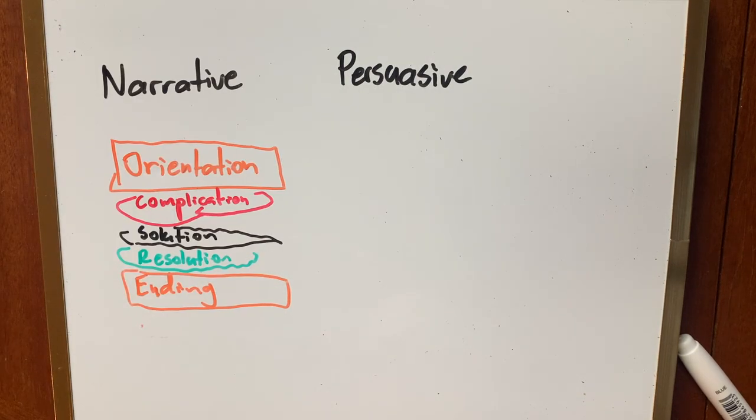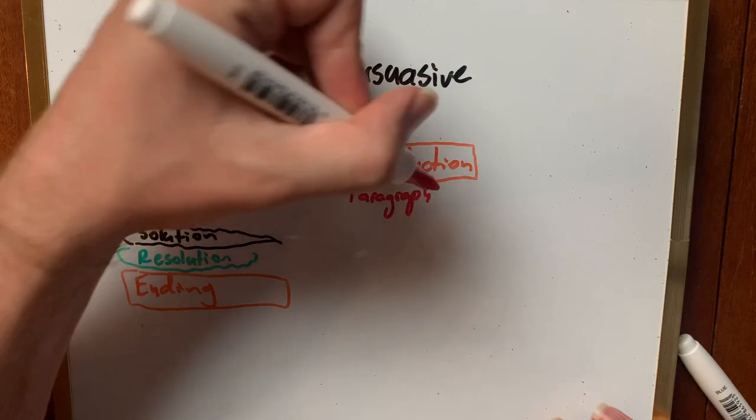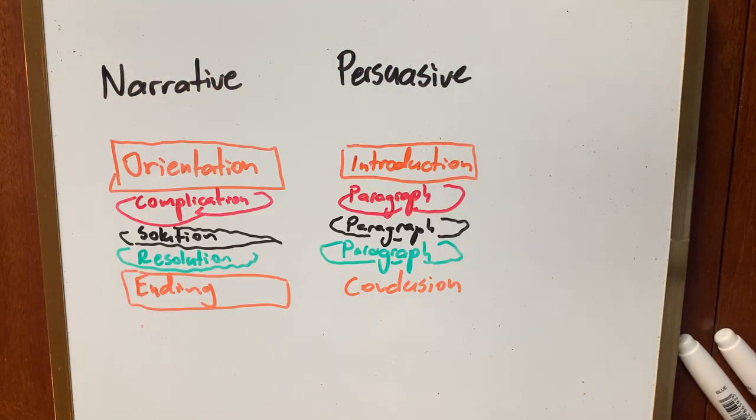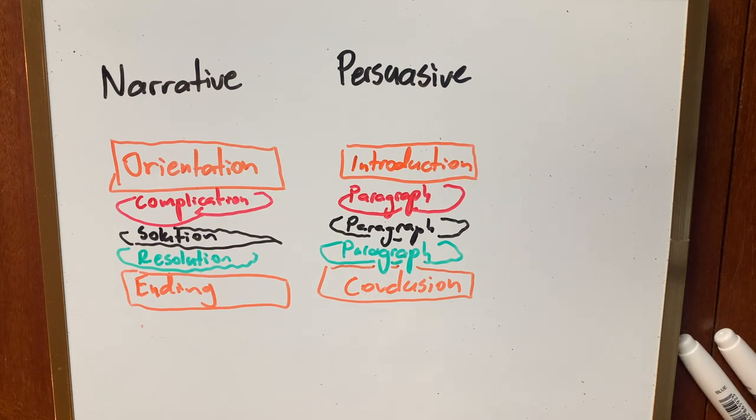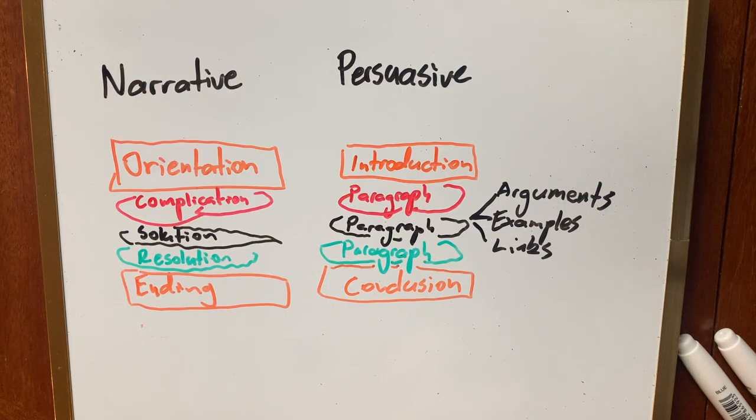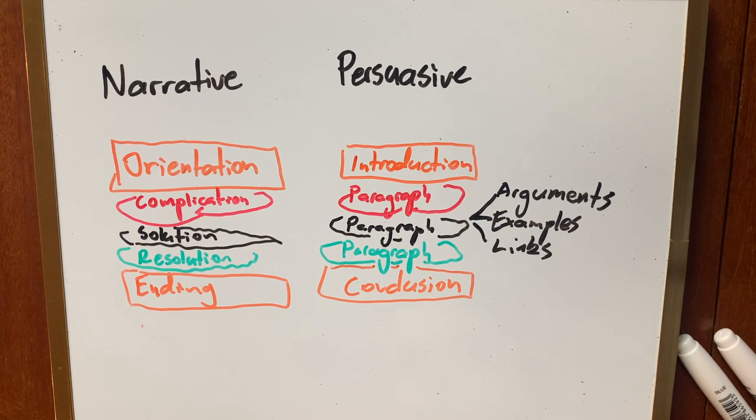This is going to be very different to a persuasive piece where you need to share your contention or your opinion in an introduction, then have your arguments in different paragraphs which will have their own organizational features like examples, evidence and links back to your contention.